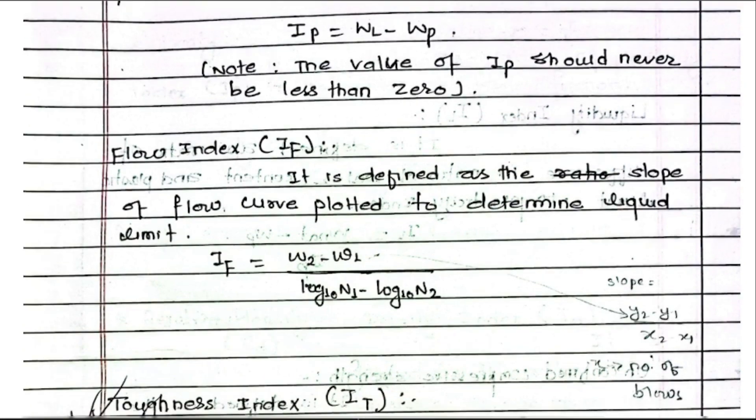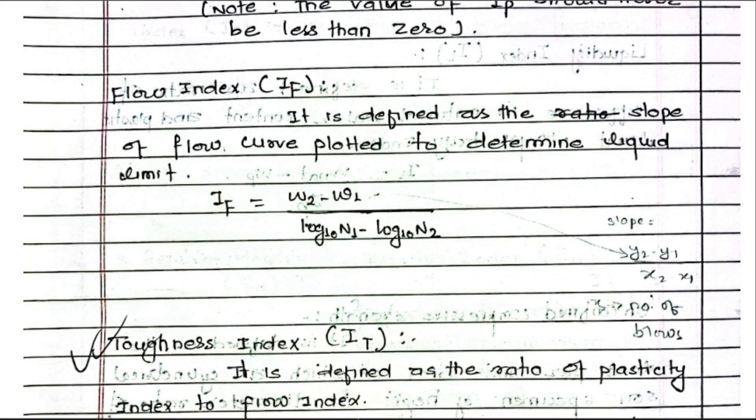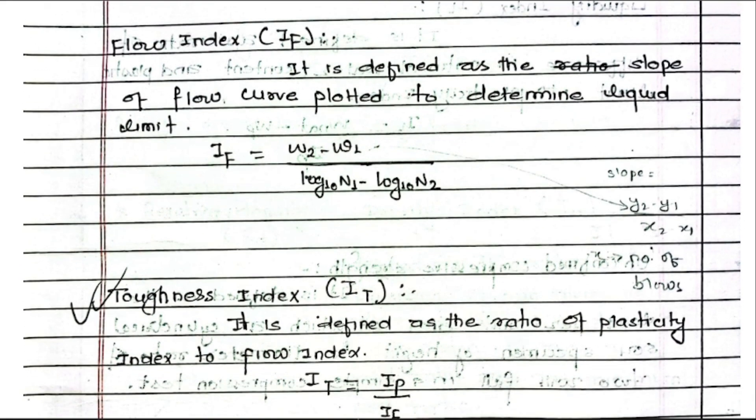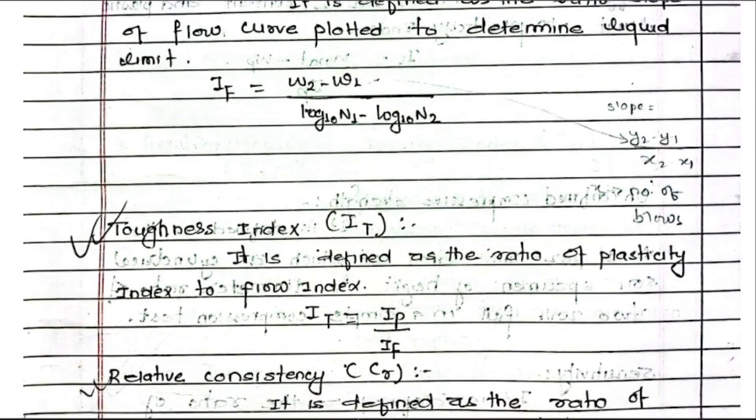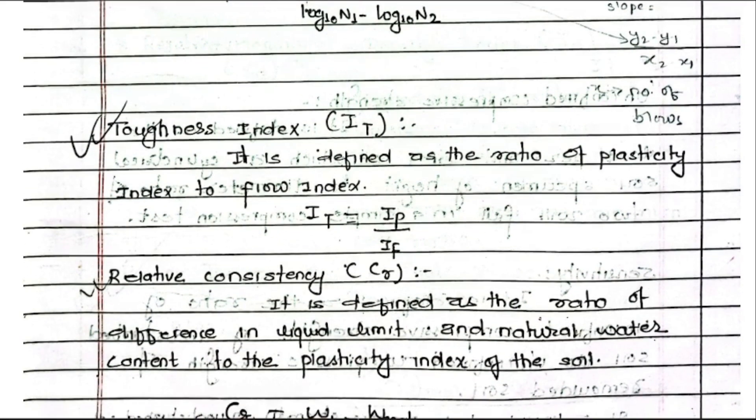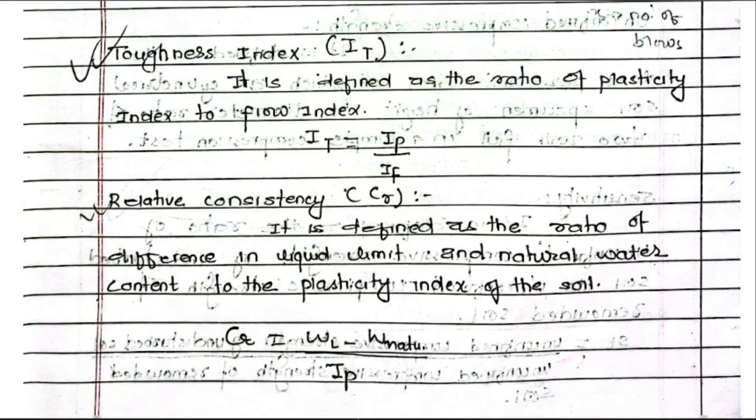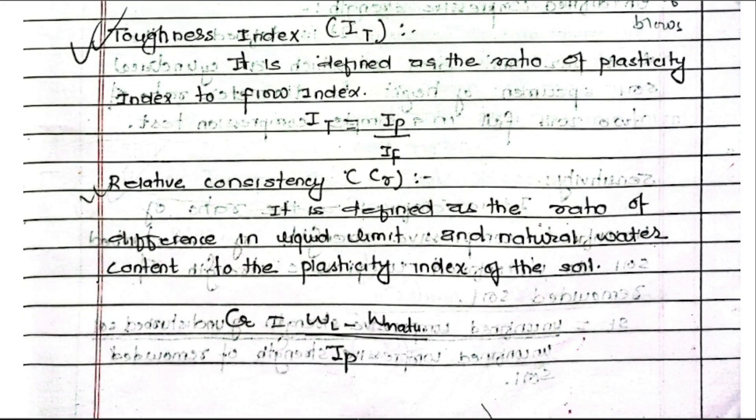Toughness index: It is defined as the ratio of plasticity index to flow index.